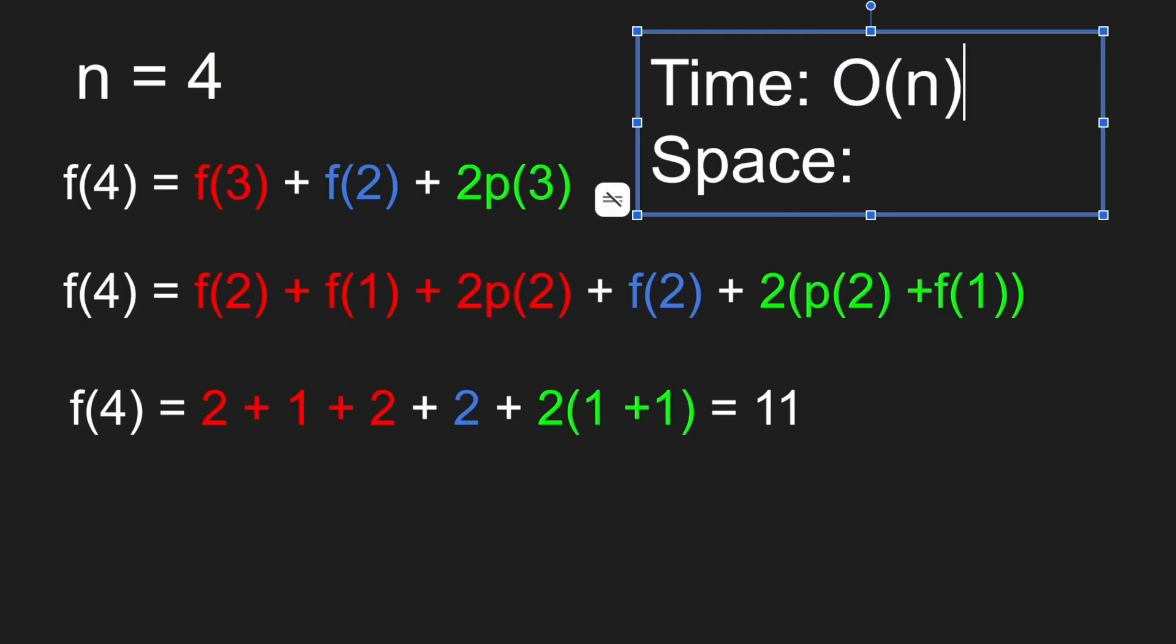So the time complexity would be O of n, because we have to recurse from n all the way to the base case. And the space complexity will also be O of n, because we will be using caching and it can take up to n space. So now let's get to the coding part.